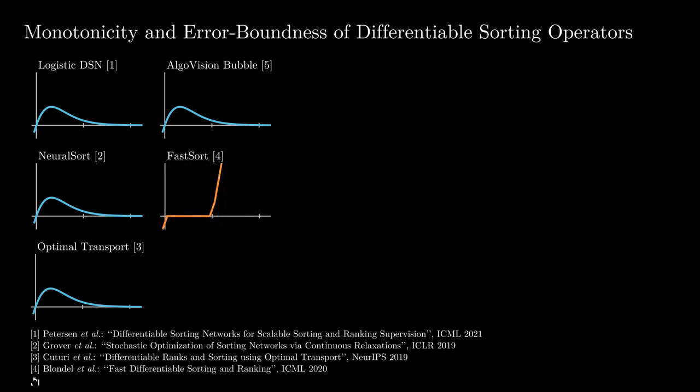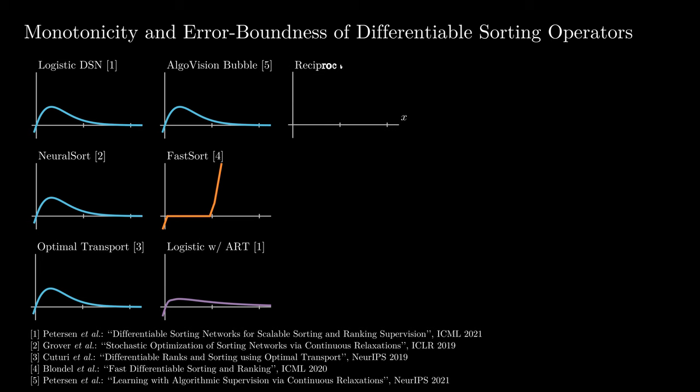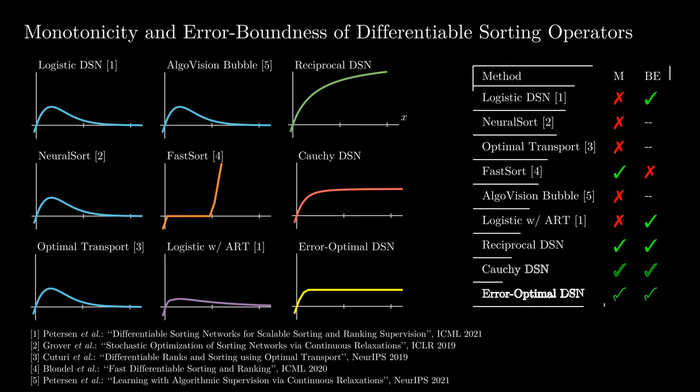FastSort is the only existing sorting operator that yields a monotonic sort, however, its error is not bounded. The differentiable sorting network with logistic distributions and activation replacement trick also yields a non-monotonic sorting function. Here, we also compare the proposed monotonic differentiable sorting networks and in the table, we summarize the properties of each function.